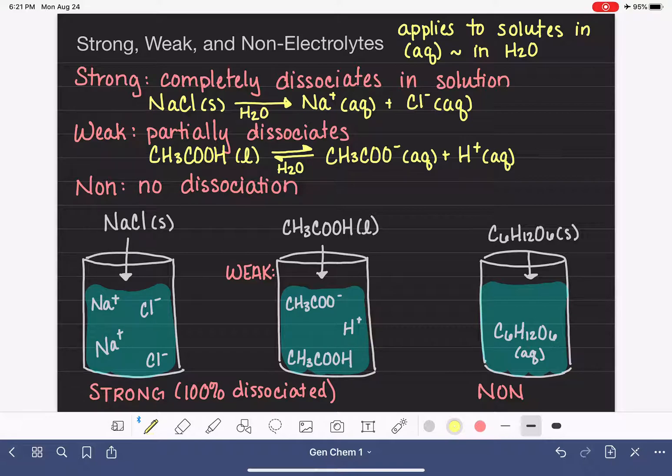And the way that we would communicate that in terms of a balanced equation, we would just write C6H12O6 in the solid state. We do use the forward arrow again. Because over here on the other side, C6H12O6, we're going to write aqueous. And if we wanted to put water under the arrow, we can do that as well.